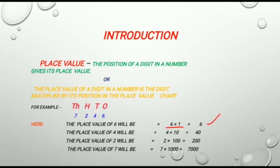Because in this number 6 is at 1's place. The place value of 4 will be 4 multiplied by 10 is equal to 40.